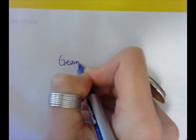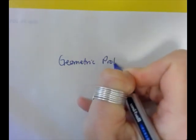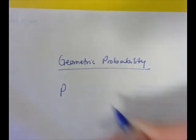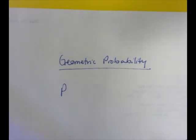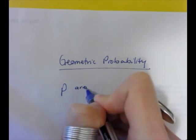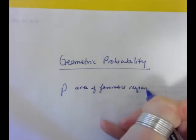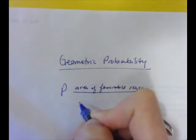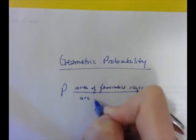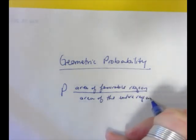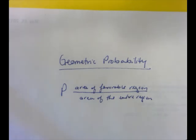So let's be reminded. Geometric probability, and you should write this in your notes, is the probability of a favorable outcome. And in this case, it's going to be the area of the favorable region over the area of the total region. I promised it would be under 15 minutes, and it is.